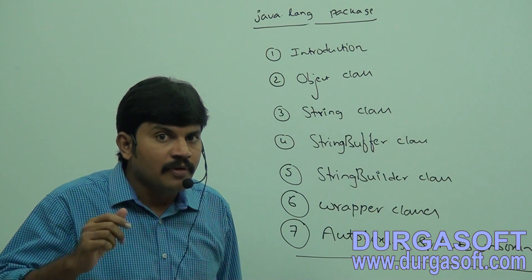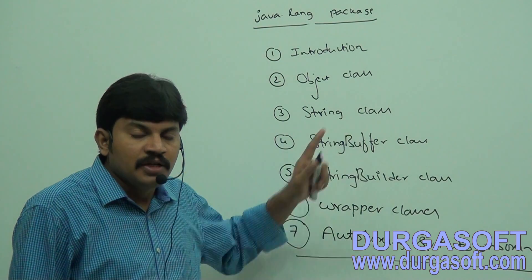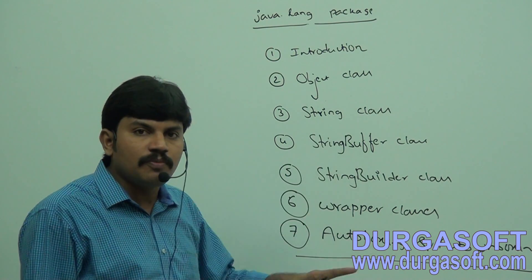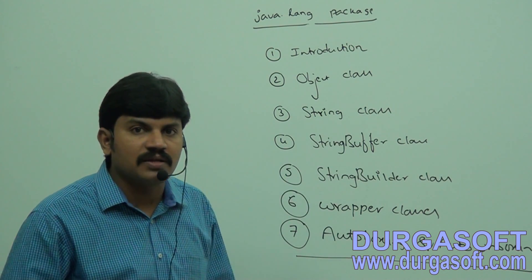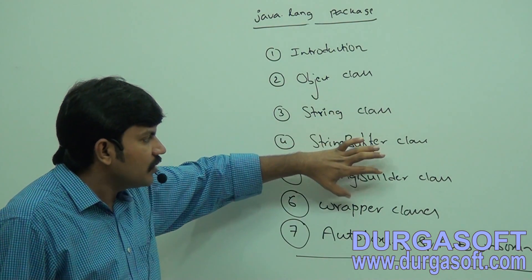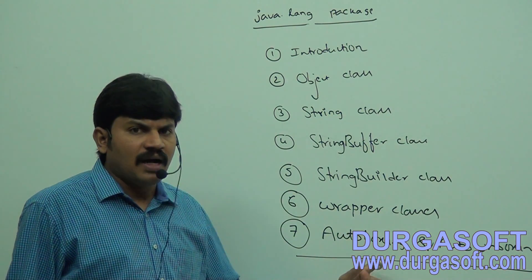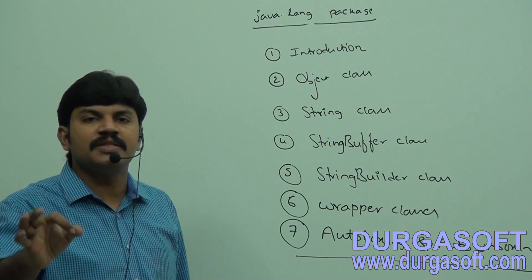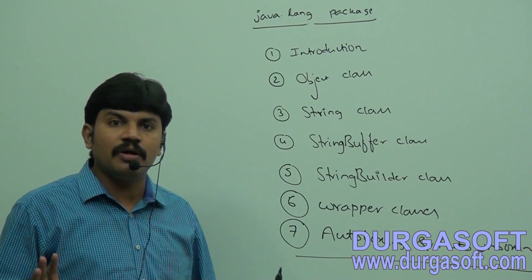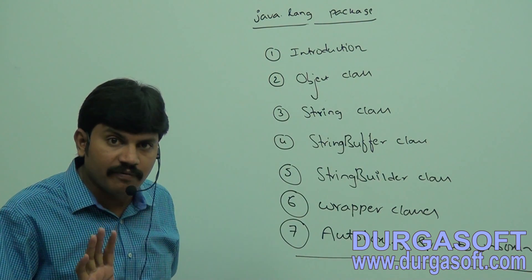String constant pool, why the immutability concept is required for String objects — is it an advantage feature or not? Is it possible to define our own immutable class? These kinds of things we will discuss. Then we go for StringBuffer and StringBuilder — what is the difference? And then wrapper classes, and then auto boxing and auto unboxing. This is my agenda for the next 20 hours about java.lang package. Make sure you people should be aware clearly and understand each and every point.